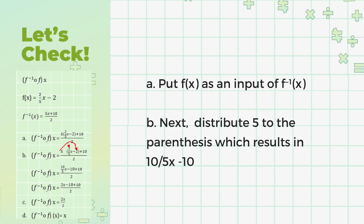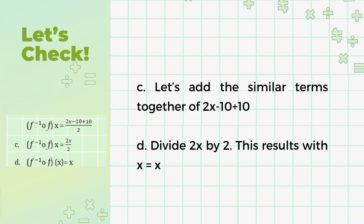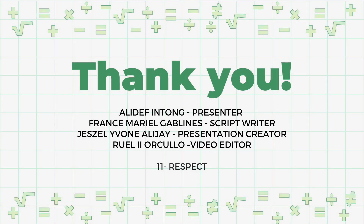Again, let's put f(x) as an input of f inverse of x. Next, let's distribute 5 to the parenthesis by multiplying 5 to (2 over 5)x, which results in (10 over 5)x, and 5 to negative 2, which gives us negative 10. Now that we have 2x minus 10 plus 10, let's add the similar terms. Positive 10 added to negative 10 gives 0, so only 2x will be left. Let's simplify by dividing 2x by 2, giving us only x. Therefore, we can say that our inverse is correct. We are finally done.